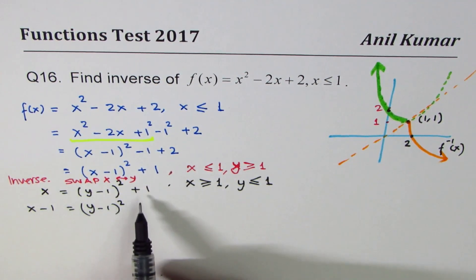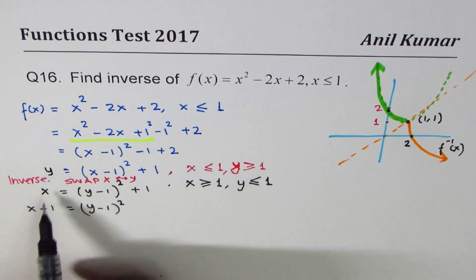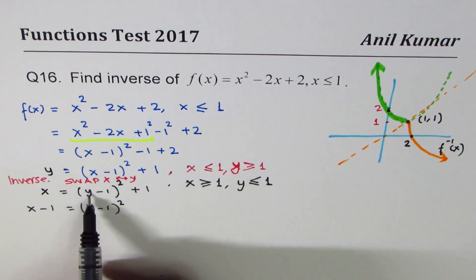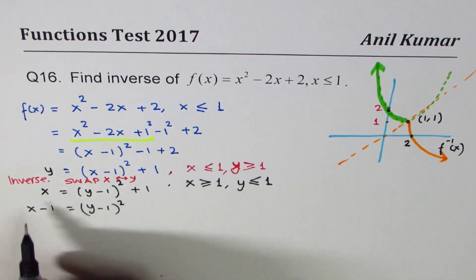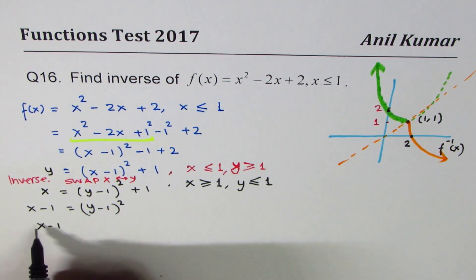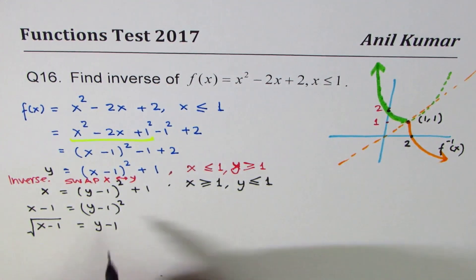We swap x and y. Earlier it was y = all this; instead of y we are writing x, instead of x we are writing y, and now we will solve for y. We do square root both sides: √(x - 1) = y - 1. Square root of square is y - 1.